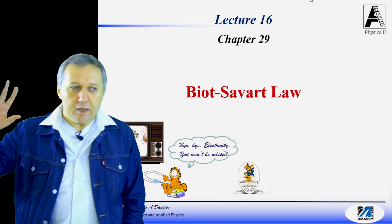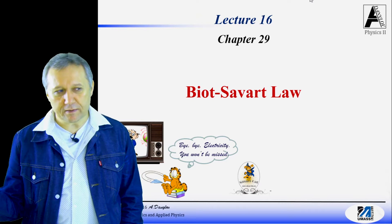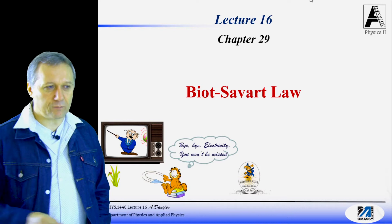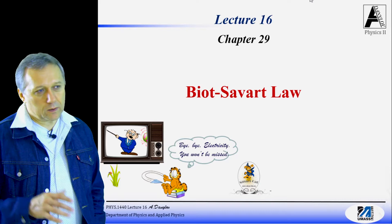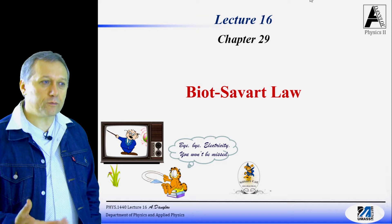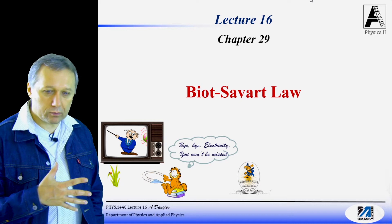There are no magnetic monopoles - so far no one has ever seen them. As a result, all magnetic field lines form closed loops. That's what we discussed yesterday. At the end we refreshed the vector product, the cross product, because from now on most of the formulas and laws are going to have the cross product.